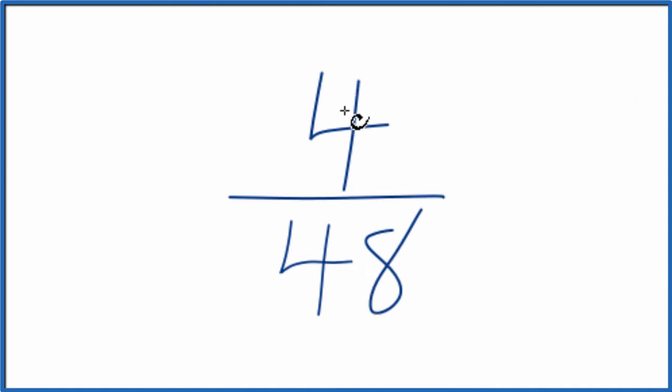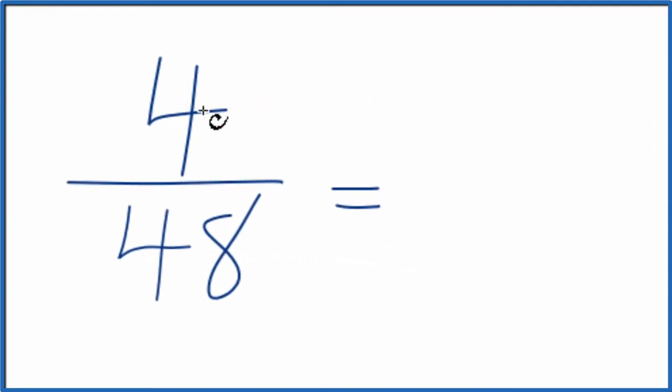It looks like 4 should go into 48 evenly. If we divided the numerator by 4, that's 4 divided by 4, that would give us 1. And the denominator, 48 divided by 4, that's 12.